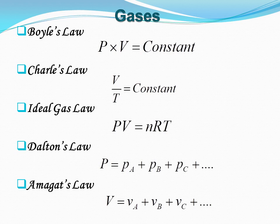Next is Dalton's law, which states that the total pressure exerted by a gaseous mixture is equal to the sum of the partial pressures of the component gases. That is, P = P_A + P_B + P_C. Here, partial pressure is the pressure that a component gas would exert if it were present alone in the same volume and temperature.